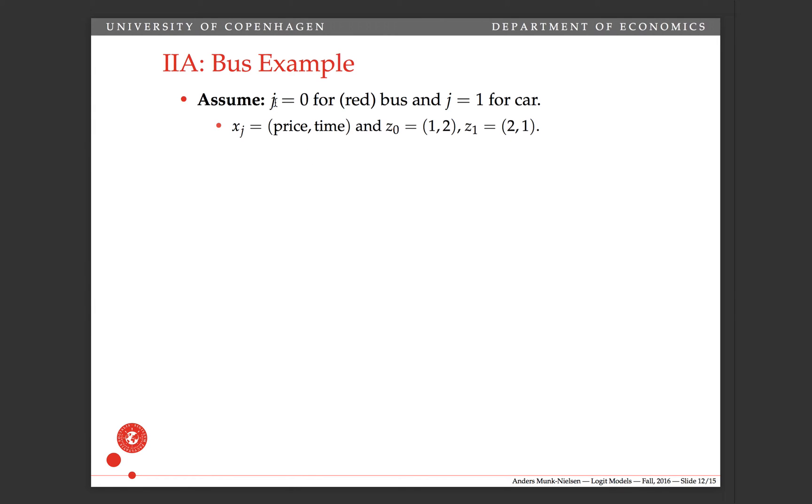Suppose there are two alternatives, J equals zero for red bus and J equals one for car. And then we're going to add a blue bus in a minute. The characteristics are price and time for these two modes of travel. And suppose that they are 1,2 and 2,1 for the two alternatives. Okay, furthermore, let's assume that the beta's coefficients are such that half of the people choose to go by the bus.